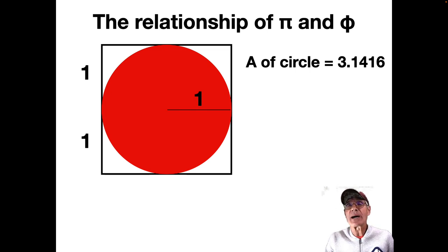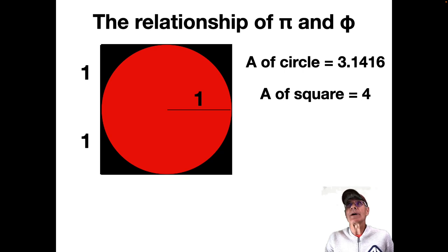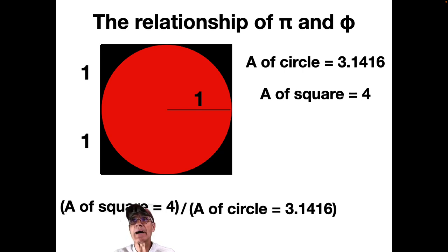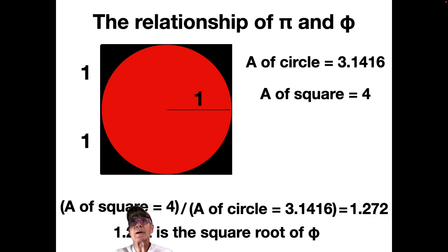Because it's Pi r squared, one squared is one. So you've got that as the area of the circle, and the area of the square, of course, is two times two, it's four. So if you take that area of four and divide it by Pi, basically the area of the circle, you get 1.272. And 1.272 is the square root of Phi.